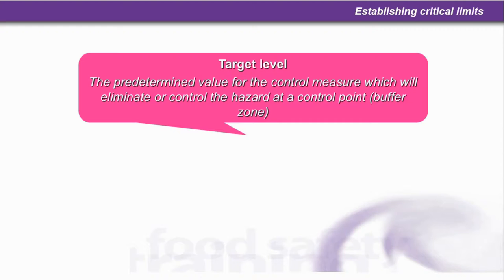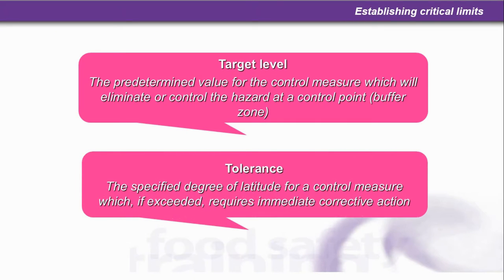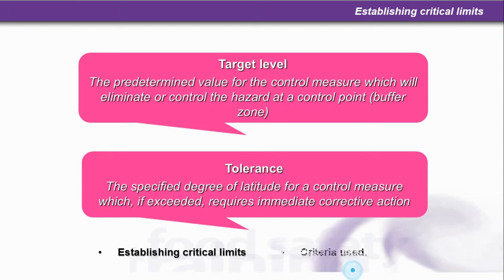This is the ideal target. The tolerance is the specified degree of latitude for a control measure which, if exceeded, requires immediate corrective action. So let's have a look at establishing critical limits and the criteria used.